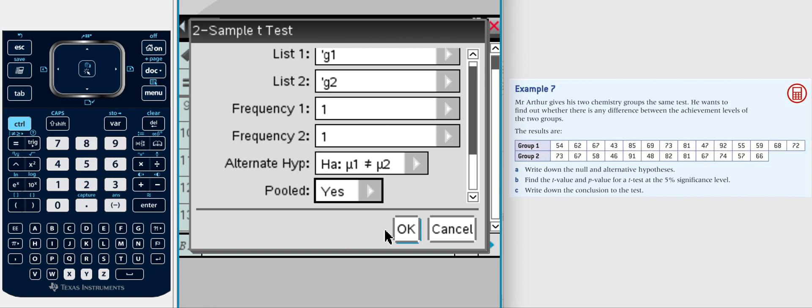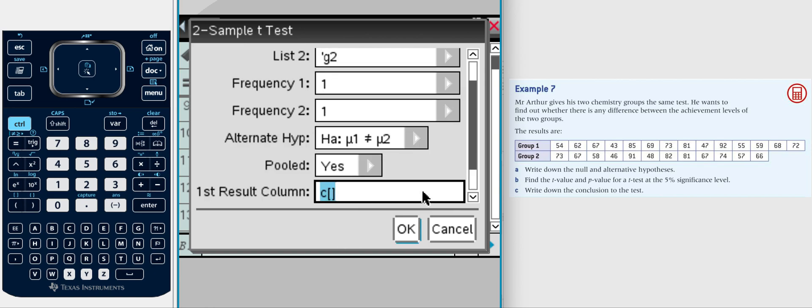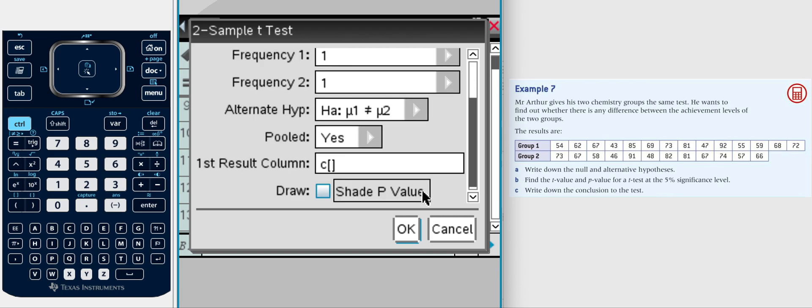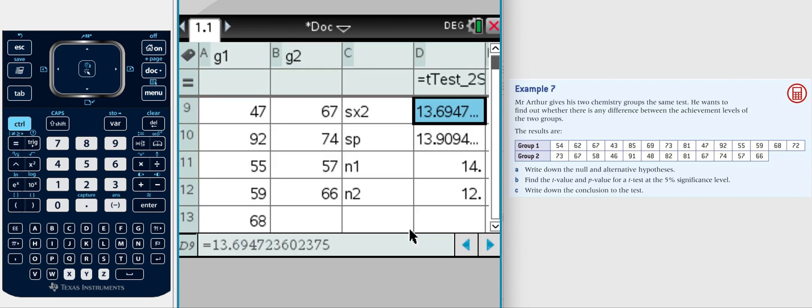Pooled data? Yes, it's pooled data. Let's just click down and see what's happening. Put our results in C column? Yes please. Shade p value? Don't worry about that for the time being. Then we click okay.